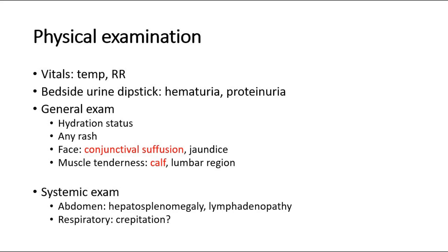On general examination, we check the hydration status, look for any rash — usually macular, papular, or purpuric — and on the face, look for conjunctival suffusion and jaundice. Check for muscle tenderness in the calf and lumbar region. For systemic examination, palpate the abdomen for hepatosplenomegaly and lymphadenopathy, and perform respiratory examination to listen for crepitations.